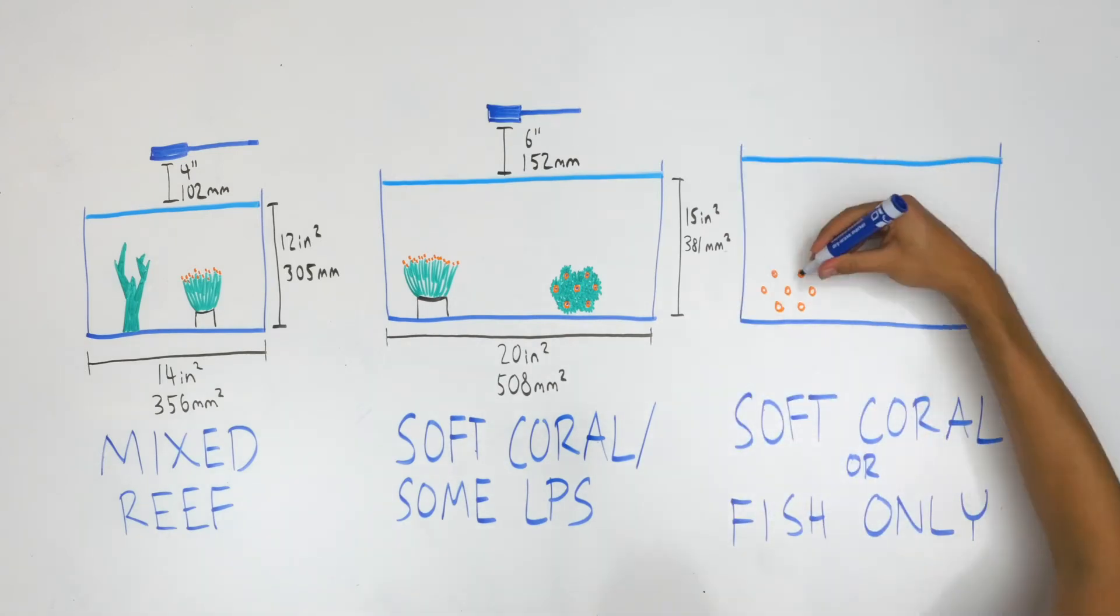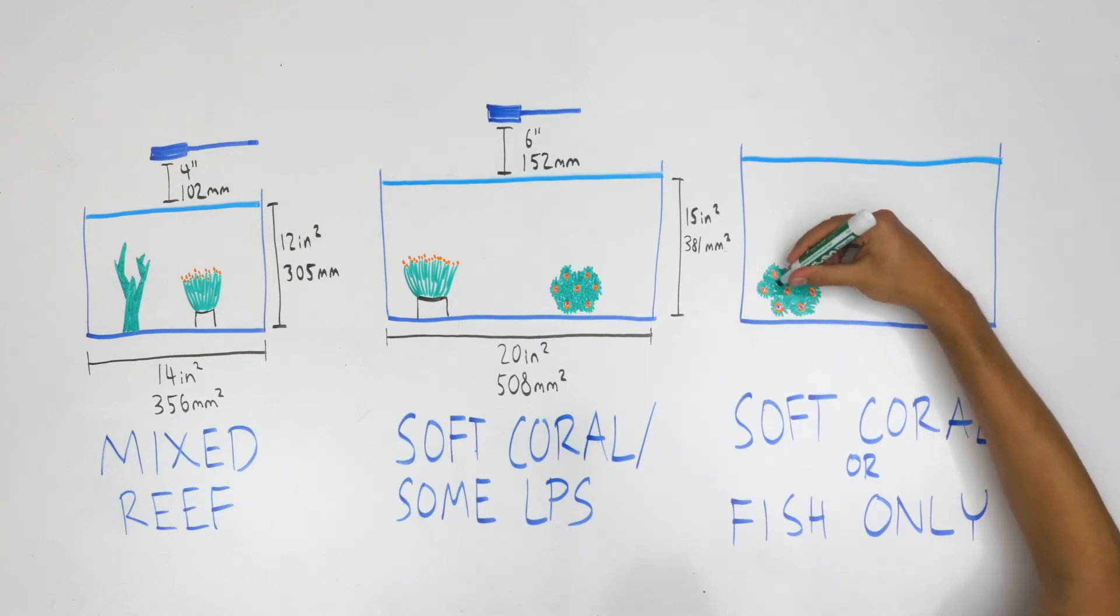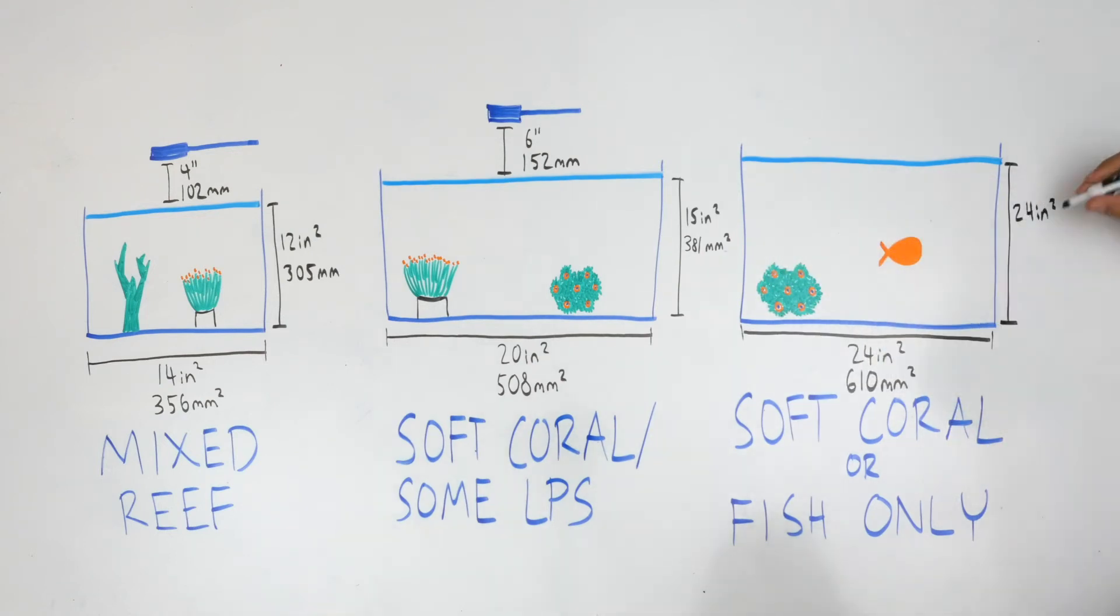Soft coral or fish only tanks of up to 24 inches tall, 24 inches wide and a depth of 24 inches, with the A80 mounted 8 inches above the water level.